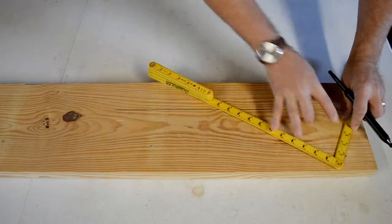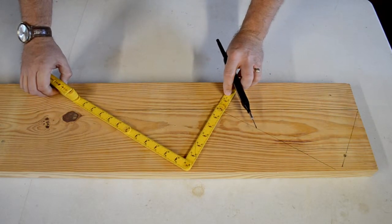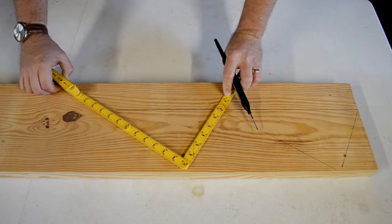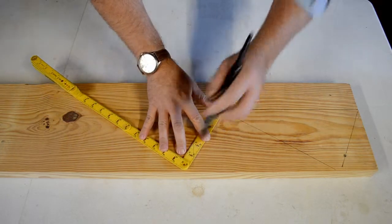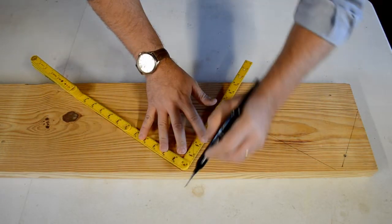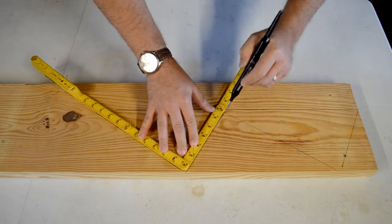These features make the Uni-Ruler a fast and easy to use layout tool. Like laying out this stringer using the rise and run, but without all the bulk of the full size framing square.